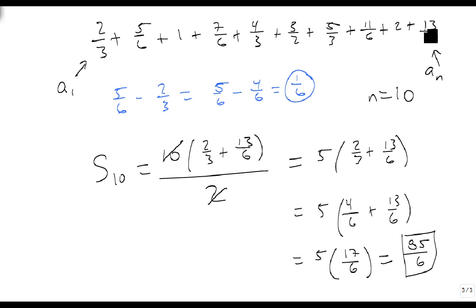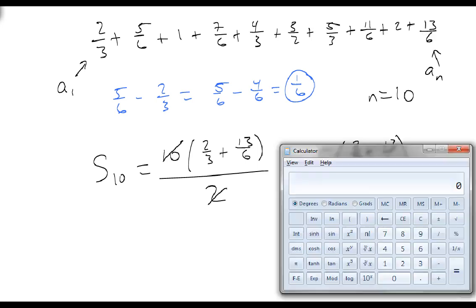So these 10 terms add up to 85 over 6. Let's double check on a calculator: 85 divided by 6 is 14.166, with the 6 repeating. So we're going to do 2/3 plus 5/6 plus 1 plus 7/6 plus 4/3 plus 3/2 plus 5/3 plus 11/6 plus 2 plus 13/6. And we got the same thing, but we did it in a much faster way using the formula. And the more terms you have, the faster and better this formula is.